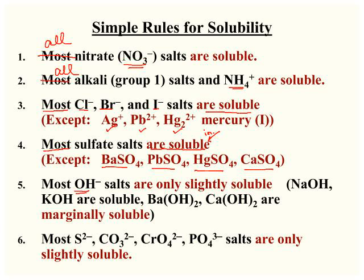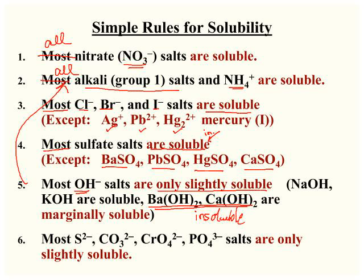Most hydroxides are considered only slightly soluble unless, of course, by the previous rule they are group 1 — so sodium hydroxide and potassium hydroxide are soluble. Your group 2 hydroxides are marginally soluble, and then most of your other hydroxides are considered insoluble. Most sulfides, carbonates, chromates, and phosphates are only slightly soluble and we would consider those to be insoluble in terms of net ionic equations.